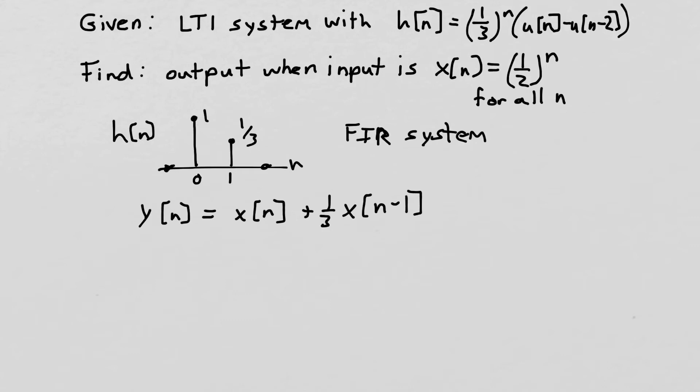All right, so now we have a difference equation. And given the difference equation and the input, it's trivial to calculate the output. So we can easily write y of n is equal to, well, it'll be a half to the n, because that's x of n, plus 1 third times a half to the n minus 1, because that's shifted by 1.